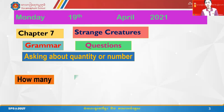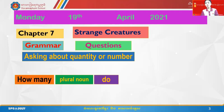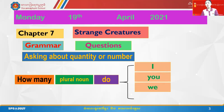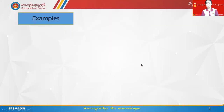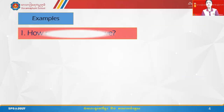Now asking about quantity and number — the structure is the same, but here we use: How many plus plural noun plus do, for subjects I, you, we, they. Plural noun means two or more — the noun gets an S. For example: how many books do I have? Plus a question mark.